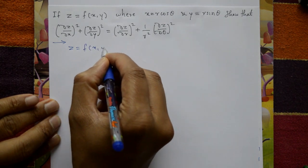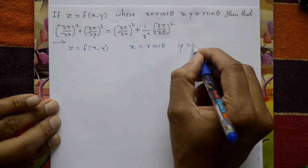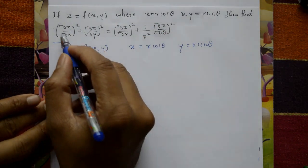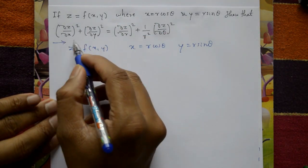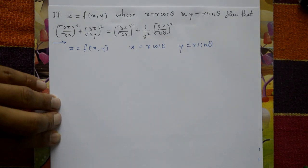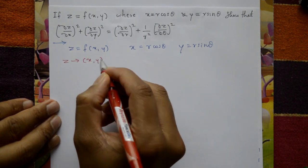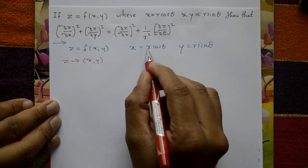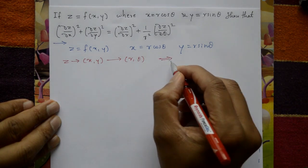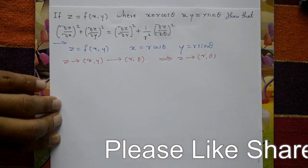Solution: Z is a function of xy, and x is equal to r cos theta and y is equal to r sin theta. Now consider first the right hand side, not the left hand side — it is not possible to differentiate from the left hand side to get the answer. We will take the right hand side: dou z by dou r. Z is a function of xy, and x and y are functions of r and theta, so Z is a composite function of r and theta.